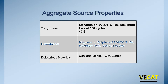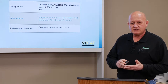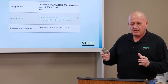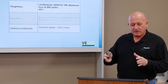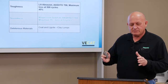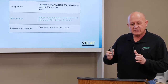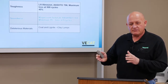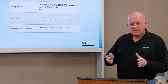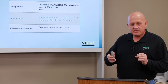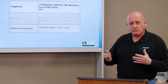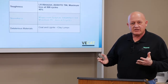The other aggregate source property is soundness. Relative to the solutions utilized in sodium or sulfate soundness testing, it's either a sodium sulfate or magnesium sulfate solution. Here in Virginia, we use a magnesium sulfate solution. Aggregate particles are prepared, placed dry into the solution, and during the first immersion cycle the material absorbs the solution into its pores. At the conclusion of that cycle, the material is dried to a constant mass, then reinserted into the solution. Upon reinsertion, previously dehydrated salt crystals rehydrate, creating an expansive force inside the aggregate that degrades the material — simulating freeze-thaw conditions.